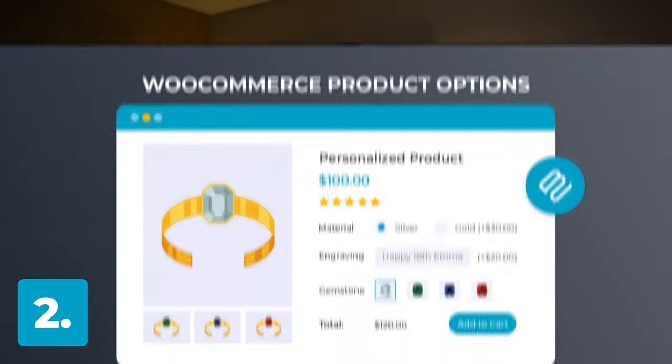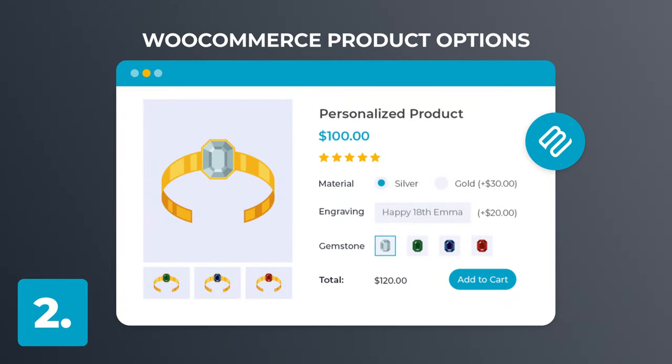Now let's move on to the best bang for your buck option, for which I'm choosing Barn2's WooCommerce Product Options. This is our own premium plugin, so of course I'm biased, but I really believe it is the best value for money, and I'll explain why.